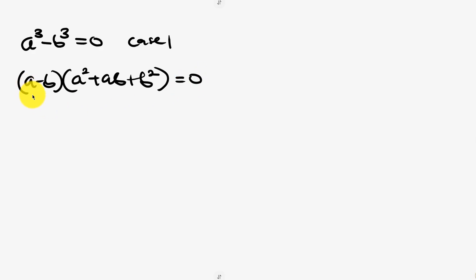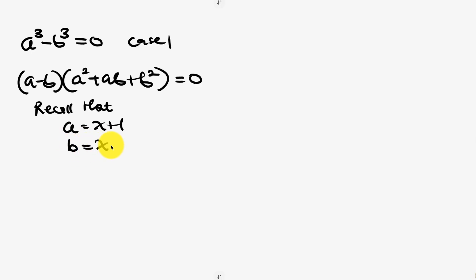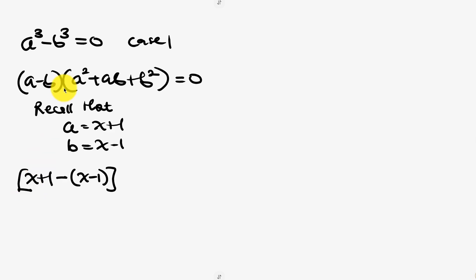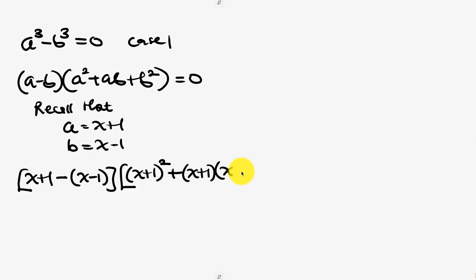Recall that a = x+1 and b = x−1. So let's plug them back in. We have (x+1) minus (x−1) in a bracket, times a² which is (x+1)², plus a times b which is (x+1)(x−1), plus b² which is (x−1)², and this is equal to 0.